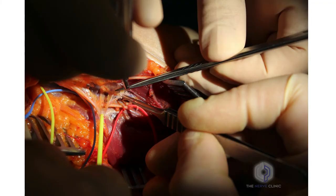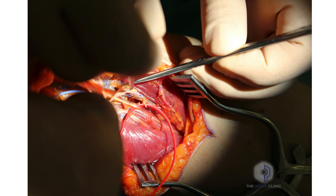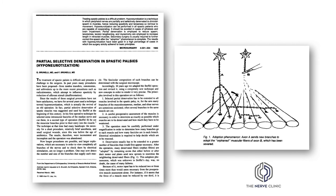The neurectomy is performed and individual branches are sectioned, leaving other branches to maintain some innervation. The strategy follows that originally reported by Brunelli in 1983, termed hyponeurotisation or partial selective denervation in spastic palsy. Sectioning a nerve branch results in some denervated muscle fibres, and intact adjacent muscle fibres may collaterally sprout and re-innervate the denervated muscles, resulting in a return of spasticity but with larger motor units.